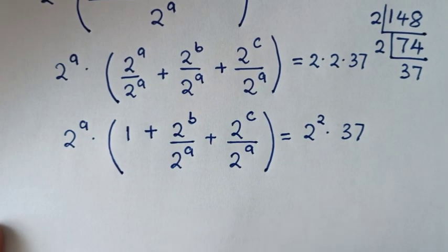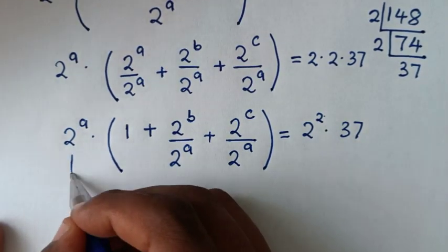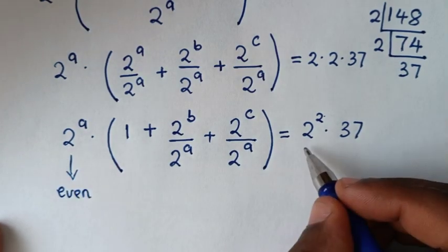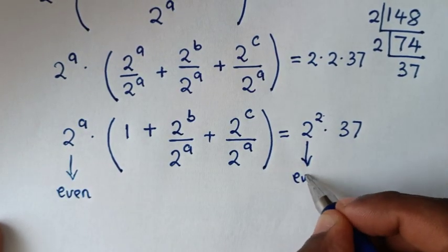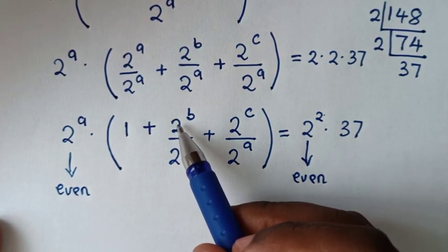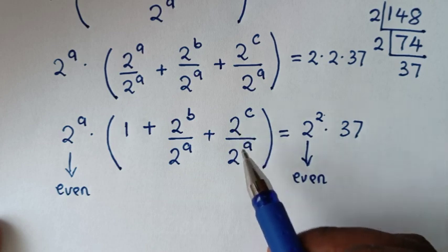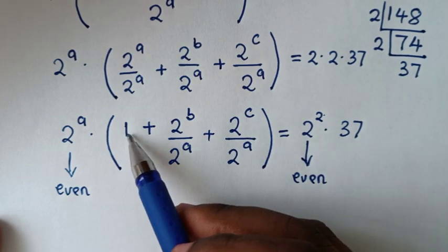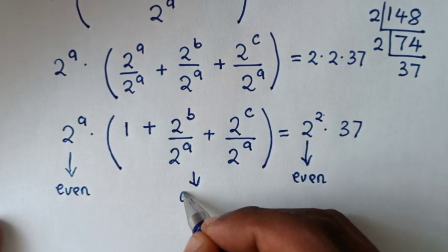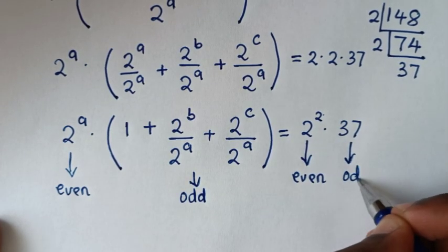Then in the next step, we will compare. Here 2 power a and 2 power 2 — this is an even number because it has a base of 2, and this is also an even number. Here, 2 power b over 2 power a and 2 power c over 2 power a both have base of 2, so they are even. Even plus 1 will be odd. So inside the bracket it is an odd number.